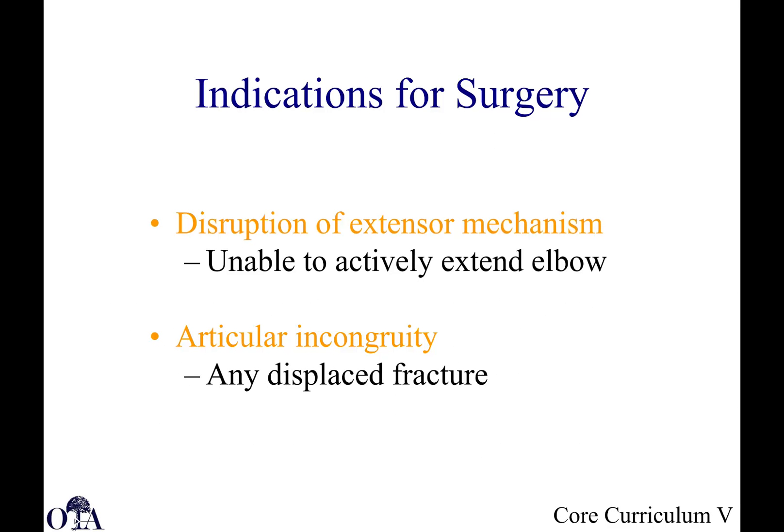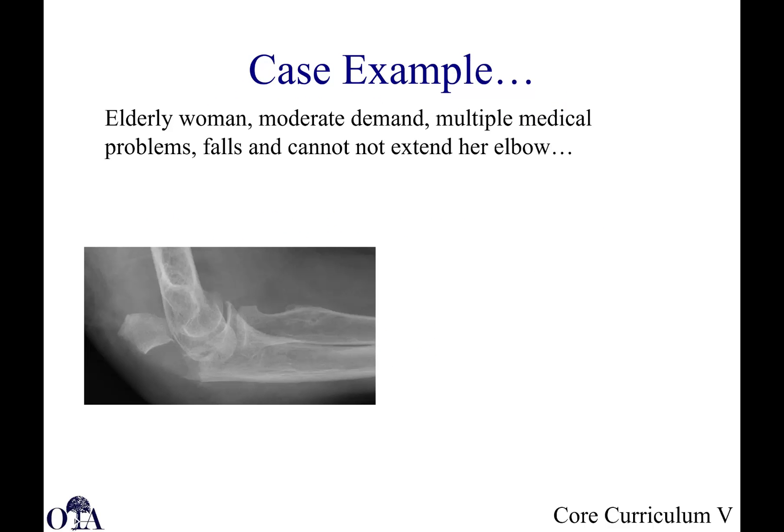Indications for surgery include disruption of the extensor mechanism — can the patient actively extend the elbow against gravity? Articular congruity is also an indication: four to five millimeters of displacement or step-off at the articular surface warrants reduction to restore congruity.